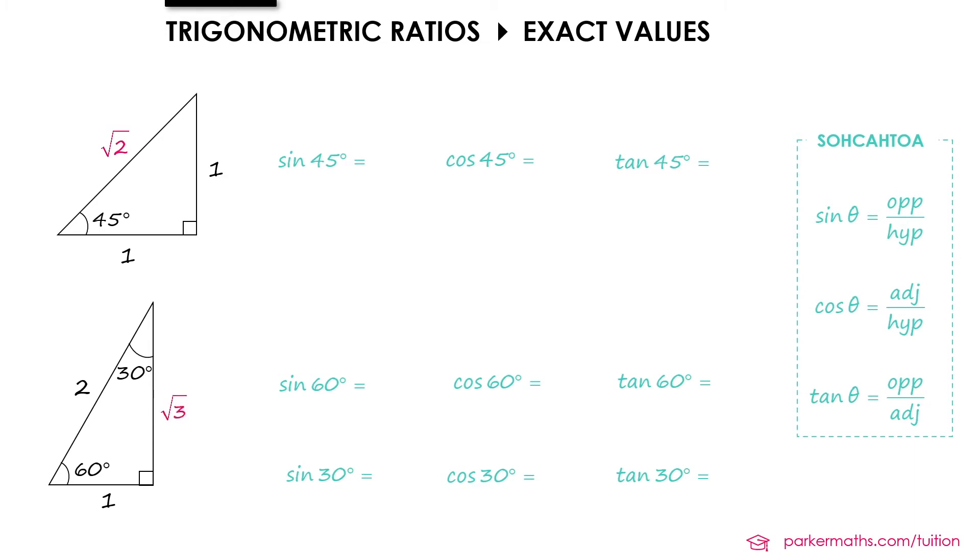Then we can work out our trigonometric ratios. To get sine 45 we use the top triangle and we do opposite over hypotenuse so 1 over root 2 for sine 45. To get cos 45 we do the adjacent over the hypotenuse which is again 1 over root 2. For tan 45 we do opposite over adjacent 1 over 1 is just 1.